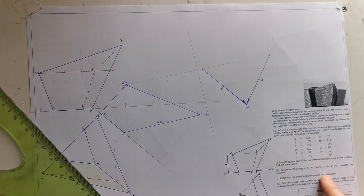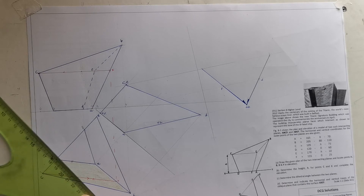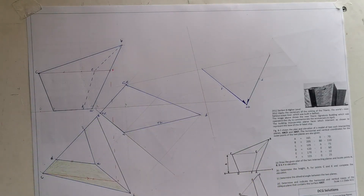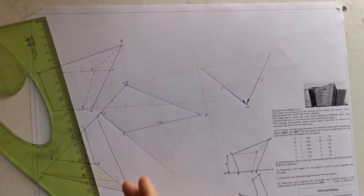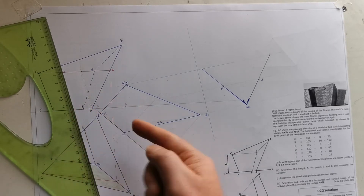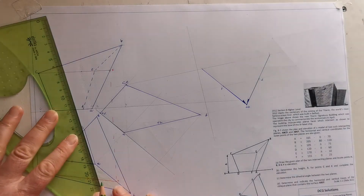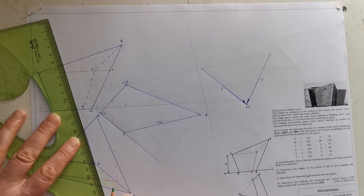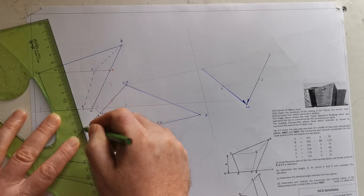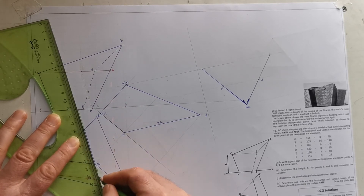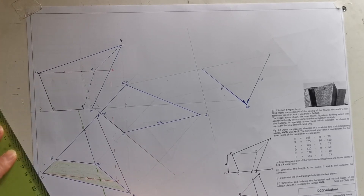I'll just indicate the dihedral angle there. That's the dihedral angle between the planes. Finally, they wanted the traces for plane ABEF. ABEF is this plane here. I said right in the beginning - if you understood this - AF is running along the ground when you're looking down into this, so AF is the horizontal trace. I'll use green for that. So AF is the horizontal trace.